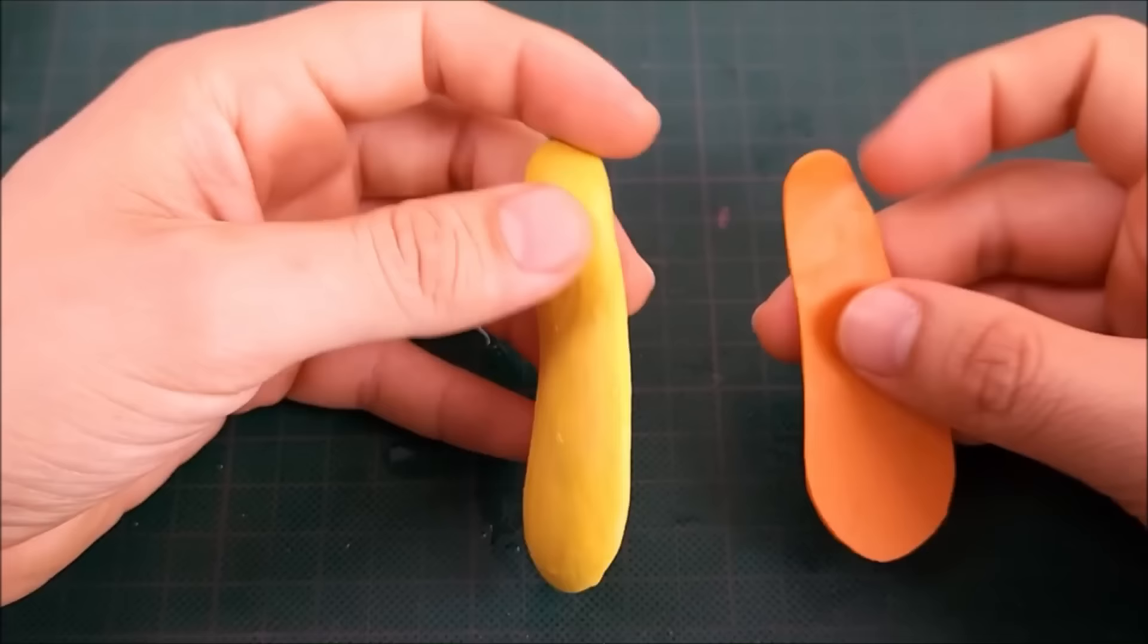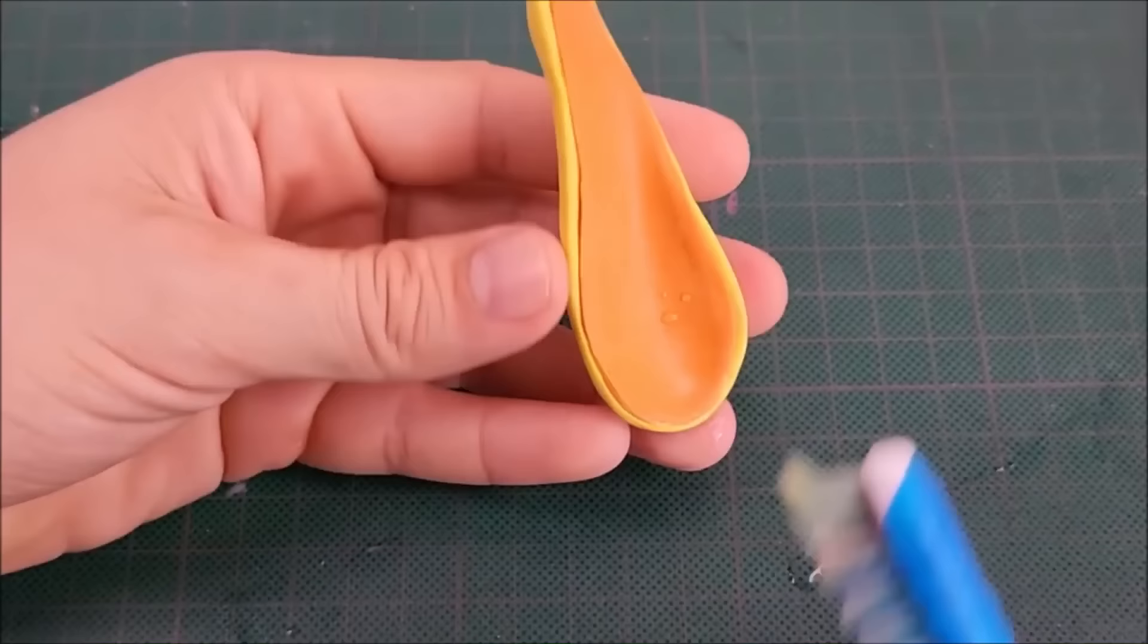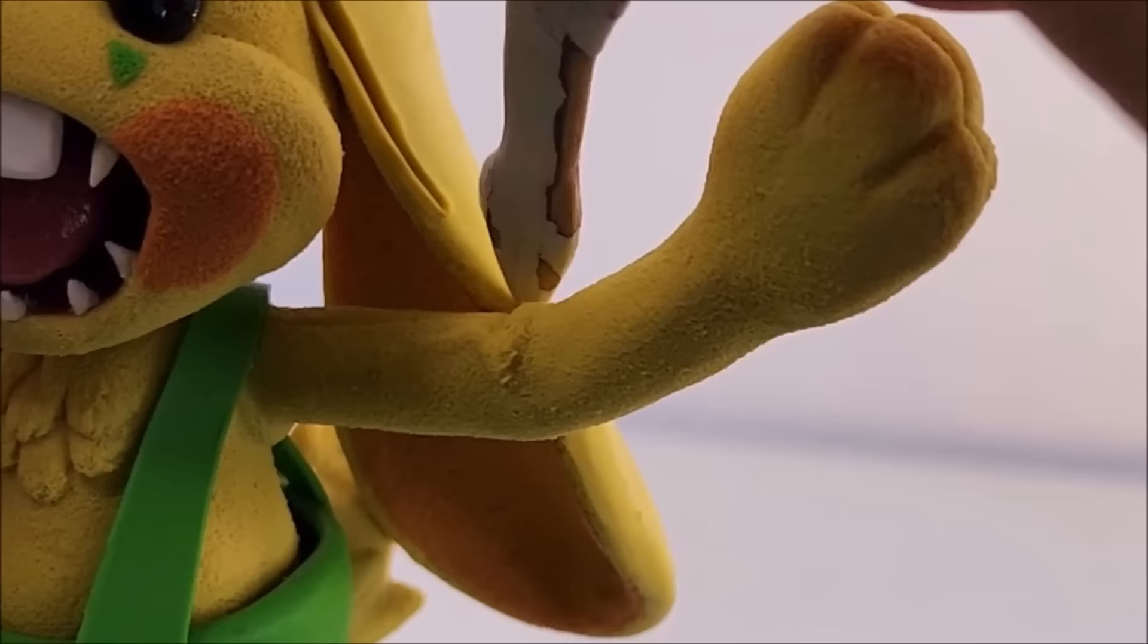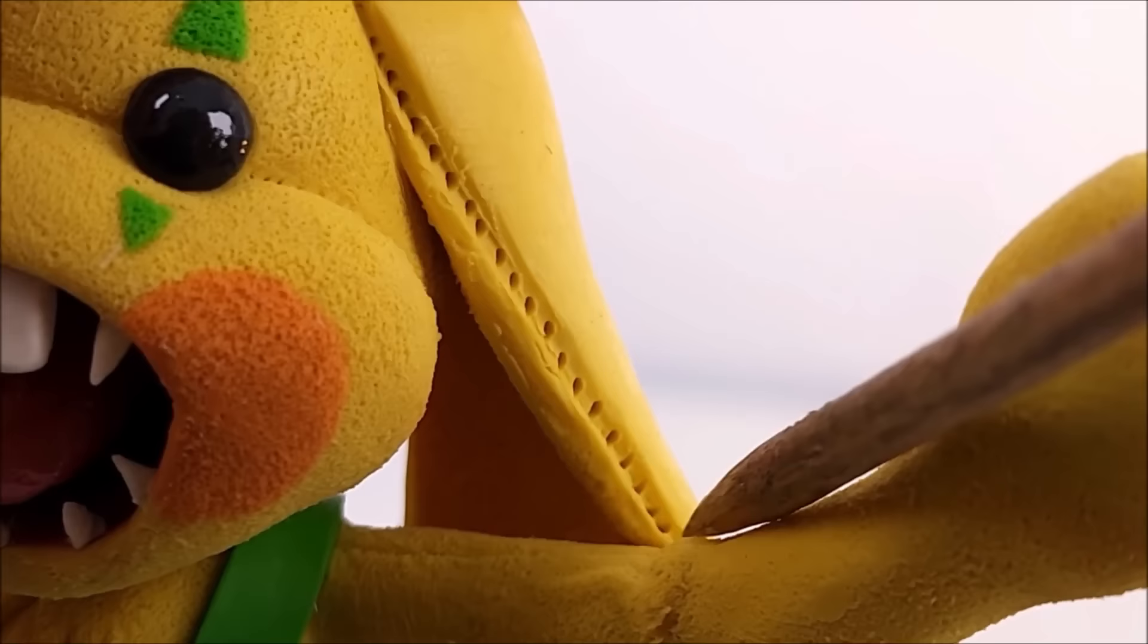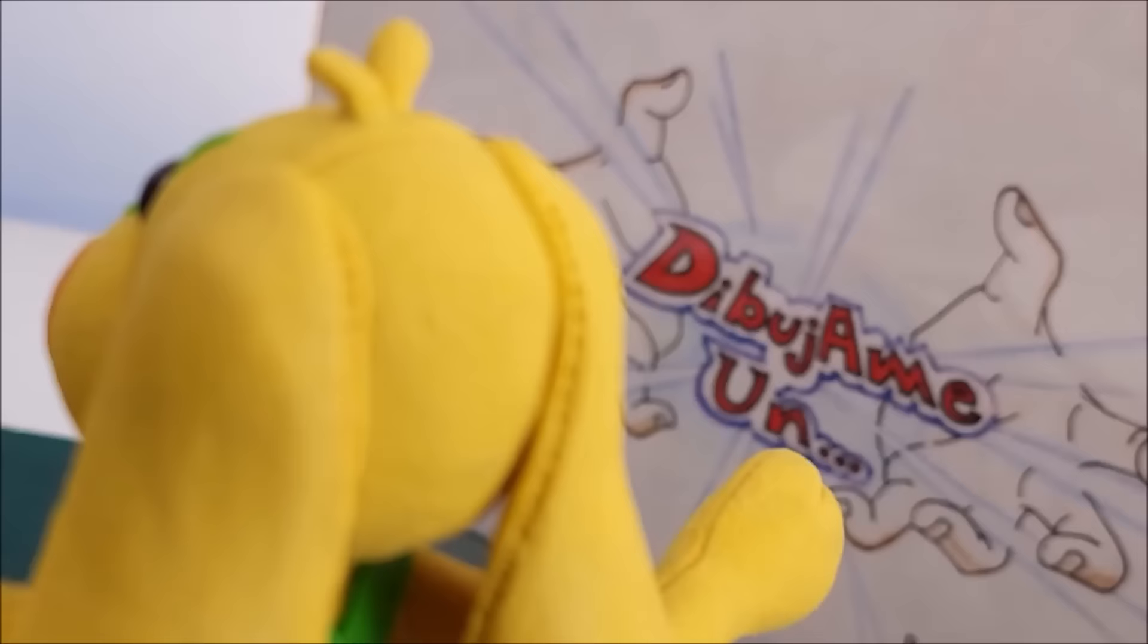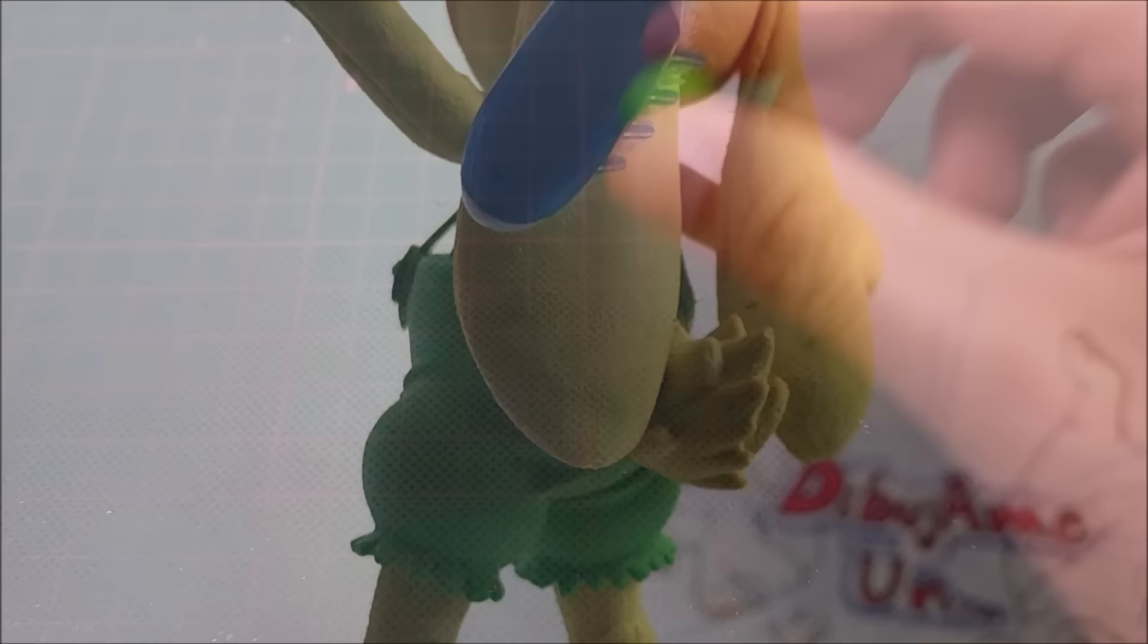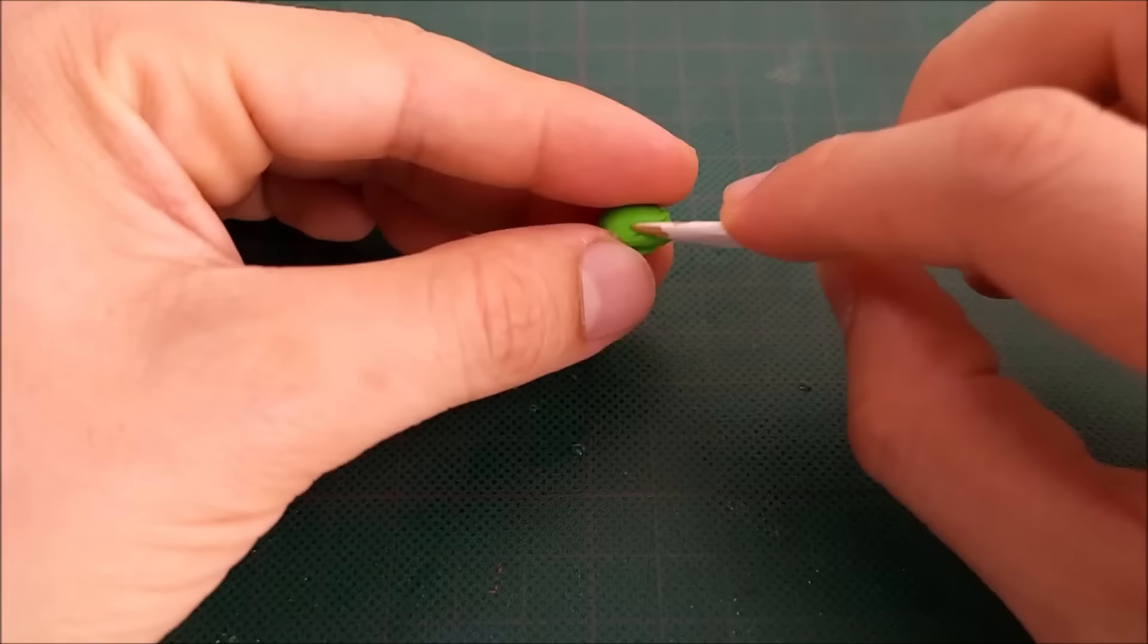Ya que ambas están listas las colocaré en el interior de las orejas y nuevamente repetimos el paso del cepillo en el área naranja. Ya podemos colocar las orejas en su lugar y con la dibujo herramienta hacer los canales y los pequeños agujeros que simulan las costuras en toda la orilla de las orejas. Seguiremos el proceso del pelaje en las orejas con nuestra escobilla técnica de afelpado, que es una forma muy elegante de llamar a nuestro cepillo usado y viejo. Con plastilina verde haré un pequeño cono y una esfera, a la cual le haremos algunas líneas en un costado con la dibuja herramienta.